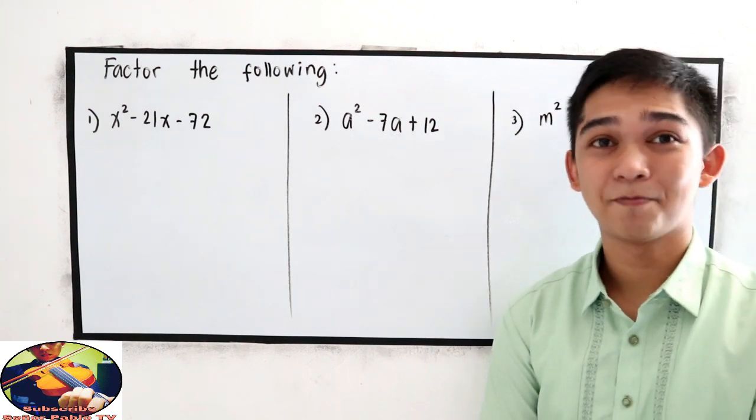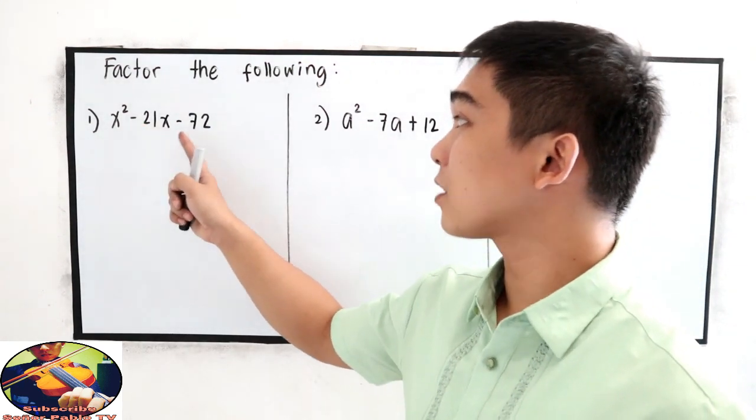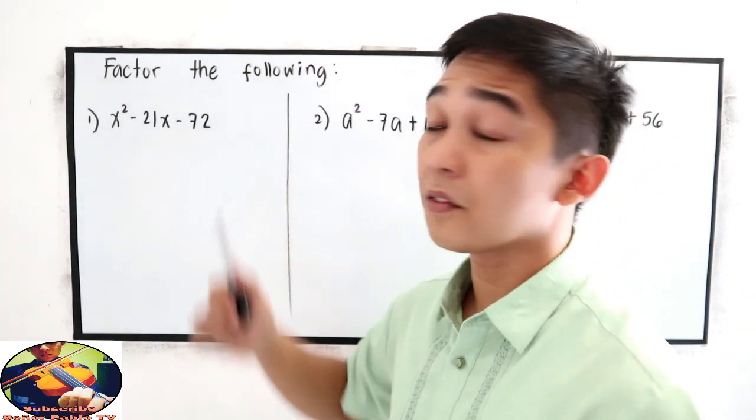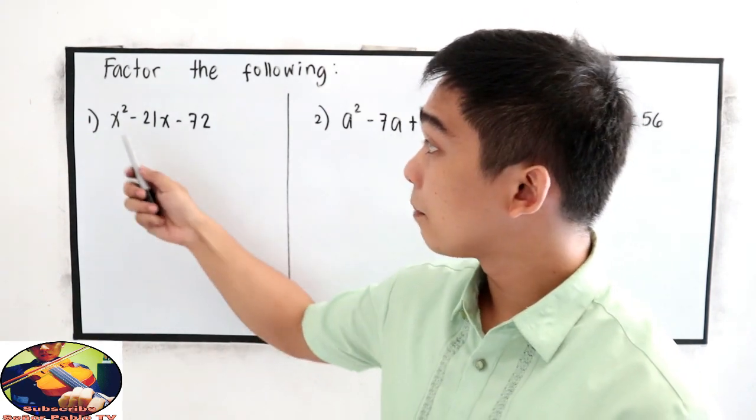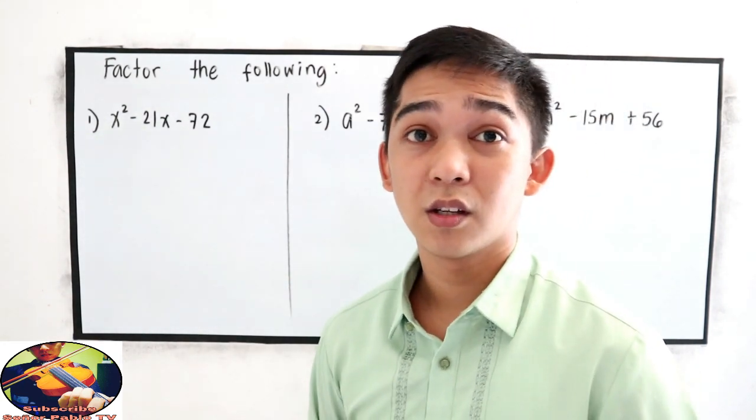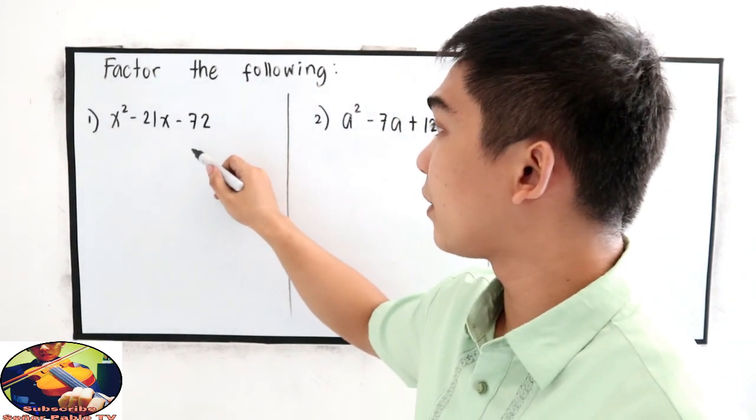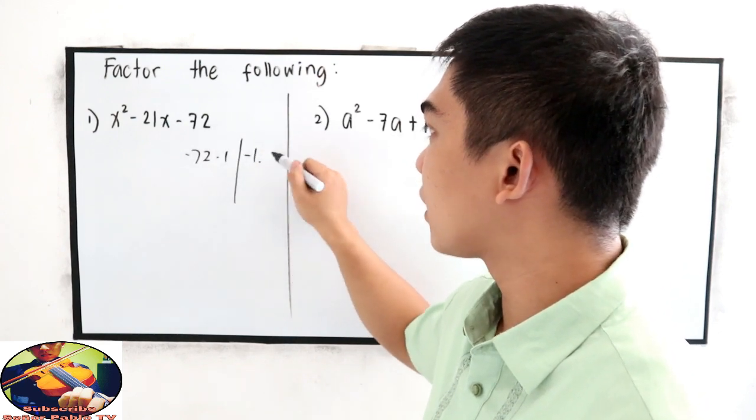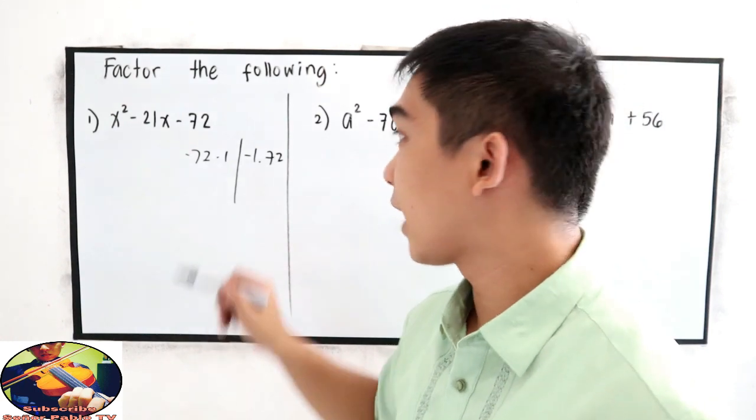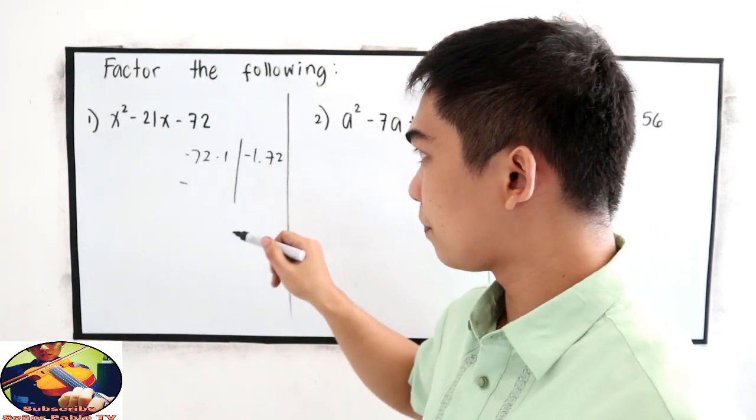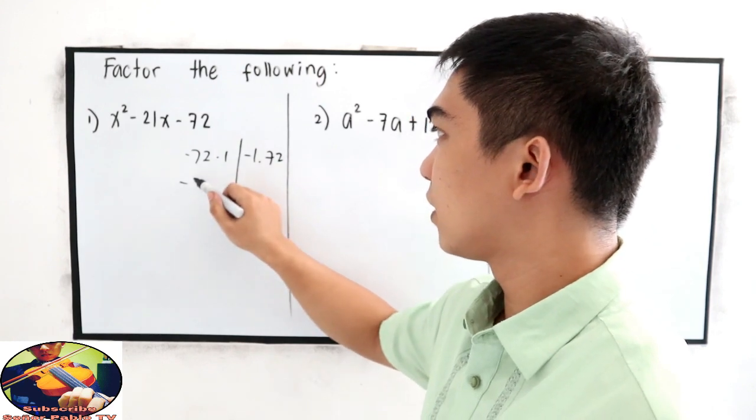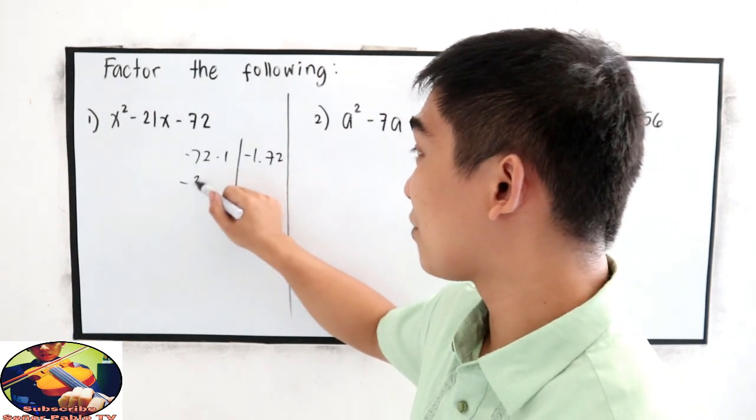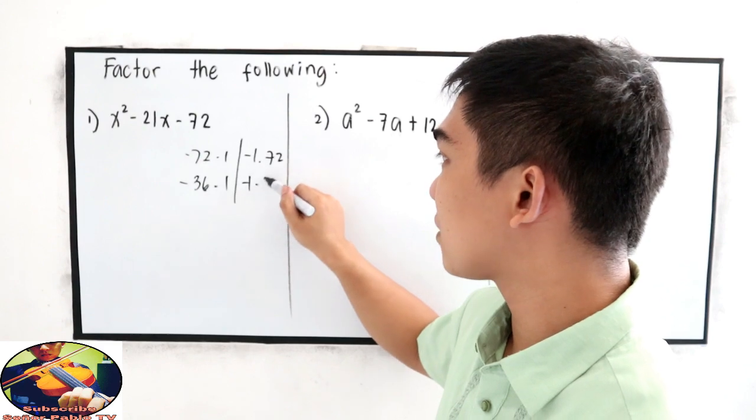Now, let's try number 1. x squared minus 21x minus 72. We're going to factor negative 72, and the sum must be negative 21. So the factors of 72 can be negative 72 times 1 or negative 1 times 72. It can be negative 72 divided by 2, that is 36. Negative 36 times 1 and negative 1 times 36.